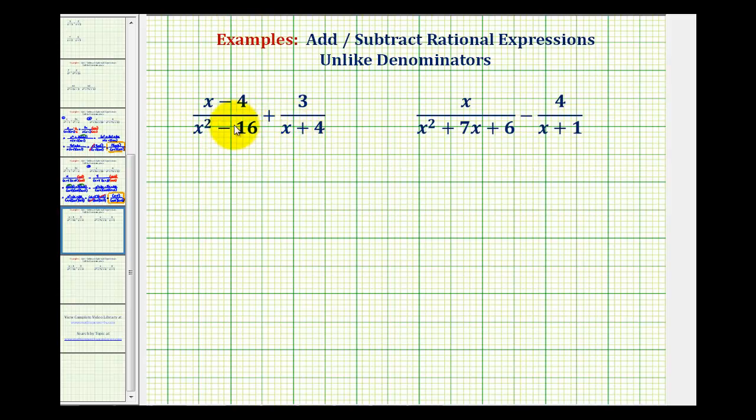So for this example here, we're going to start by factoring x squared minus 16. So we have x minus four all over, this is a difference of squares, so we'll factor into two binomial factors, where one factor is x plus four, and one factor is x minus four. Now for the second fraction, we just have three all over x plus four.